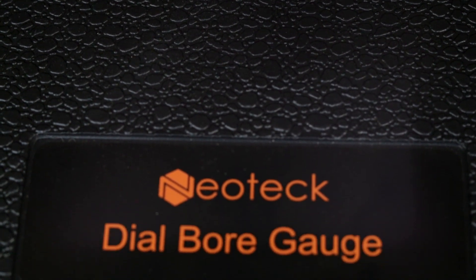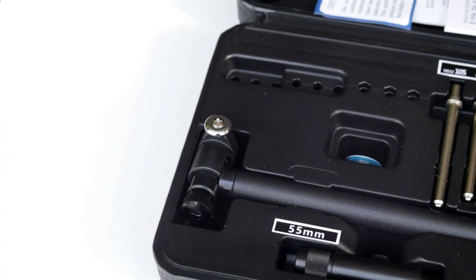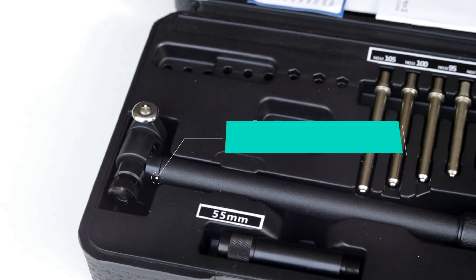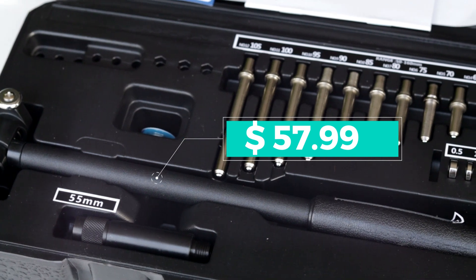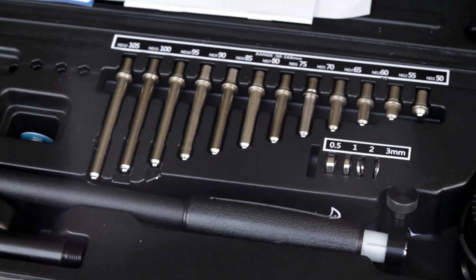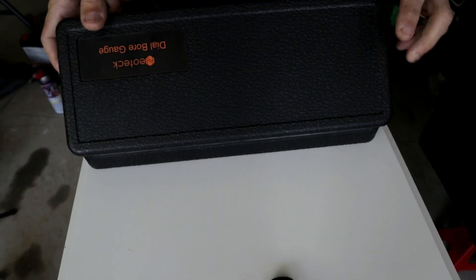So let's get to it. This one is the Neotec dial bore gauge. You can pick up this bore gauge from Amazon for around $57.99, depending on the color. The price will change, but you'll get all the different rods for whatever size you want to use, which could be anything from two inches to six inches.